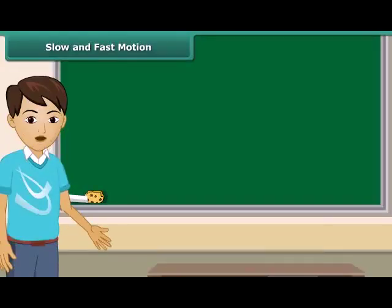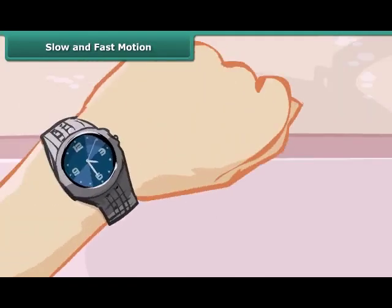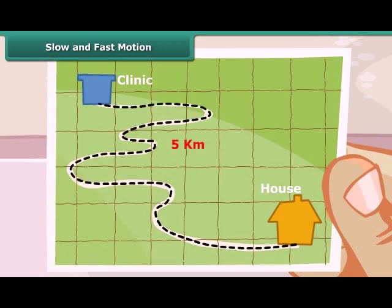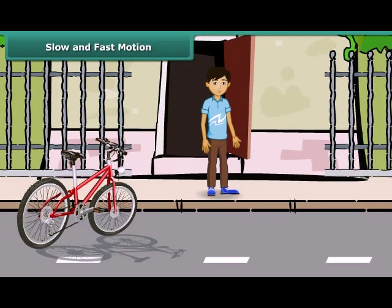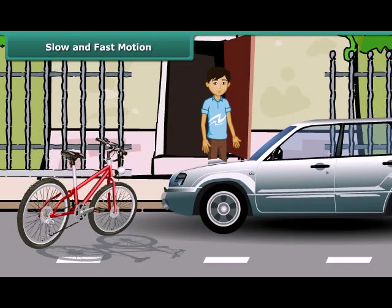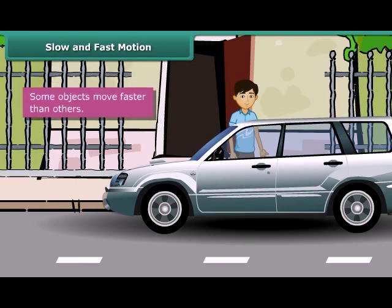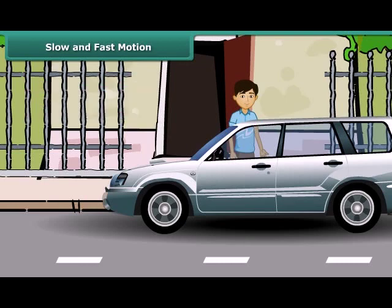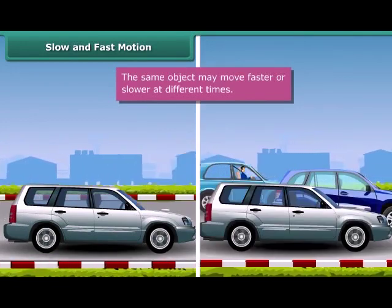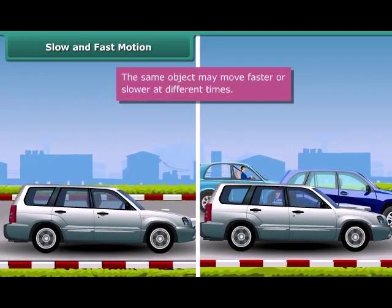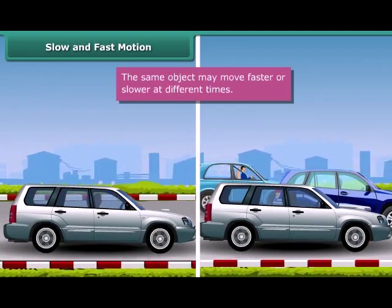Suppose you have an appointment with your doctor at 5 in the evening. It is already 4:30 pm and the doctor's clinic is 5 km away from your house. You have the choice of either cycling down or taking a taxi to the clinic. What will you do? Correct, you will take a taxi because a taxi is faster than a cycle. So we can say that some objects move faster than others. Now the same taxi moves fast on an empty road and slow on a busy road. Thus the same object can move fast at one time and slow at another time.